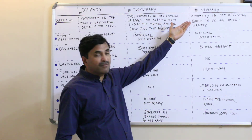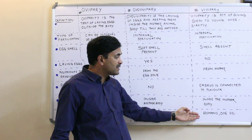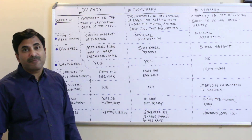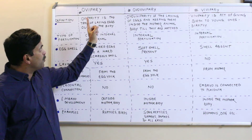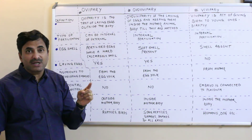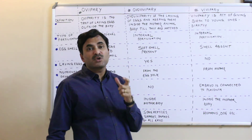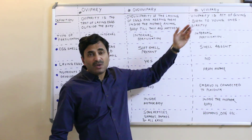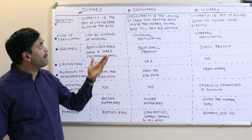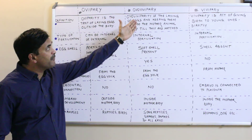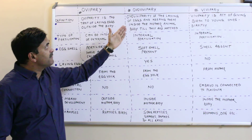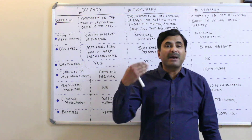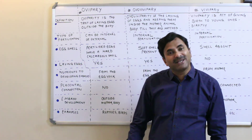Examples of viviparous organisms are humans, dogs, etc. So this was a comparative account of oviparous, ovoviviparous, and viviparous organisms. Generally, books lack a comparative account of all three together, which is what we discussed in today's video. Keep watching — in the next videos I will be uploading many new videos related to the reproductive system. Thanks a lot.